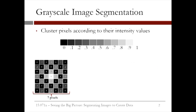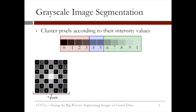Grayscale image segmentation can be done by clustering pixels according to their intensity values. We can think of our clustering algorithm as trying to divide the spectrum of intensity values from 0 to 1 into intervals or clusters — for instance, the red cluster corresponds to the darkest shades and the green cluster to the lightest. The input to the clustering algorithm should be all of the 7 by 7 intensity values, giving us 49 observations, with one variable: the pixel intensity value.